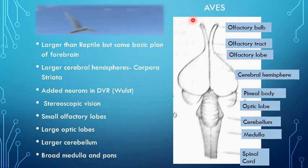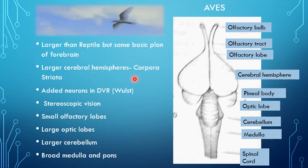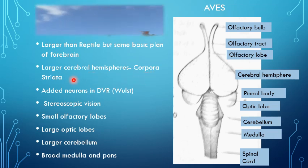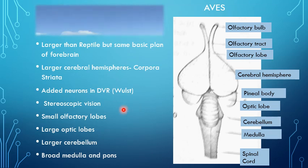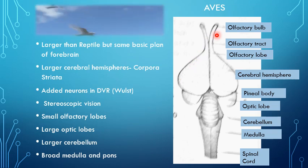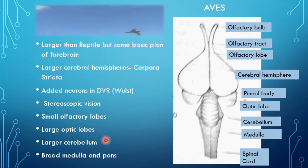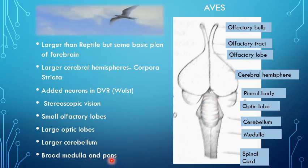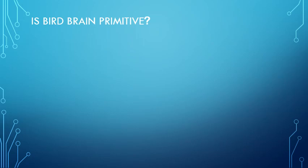The brain in aves, or birds, is larger than in reptiles but is based on the same basic plan of the forebrain as reptiles. They have larger cerebral hemispheres and a structure known as corpora striata. There are added neurons in the dorsal ventricular ridge known as the Wulst. They also have modifications for stereoscopic vision, small olfactory lobes as seen here, and large optic lobes, emphasizing the importance of vision in birds.